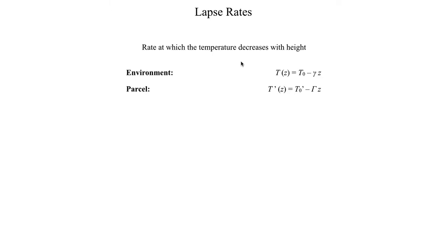For the air parcel, we're going to represent the lapse rate as capital gamma (Γ). We'll use the same convention from segment 1, where the prime symbol will be used to denote that we're talking about the air parcel.